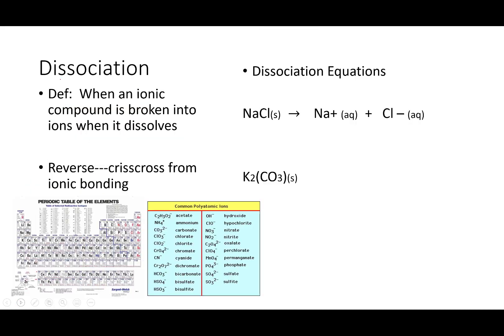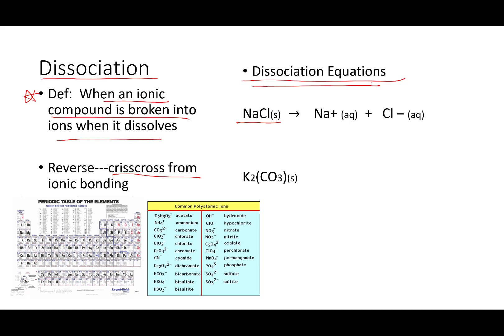This process of an ionic compound breaking into its ions is called dissociation, and that's a definition you need to know. Chemists write what are referred to as dissociation equations — these are really, really simple. It is sort of reverse crisscrossing from back when we were making ionic bonds many weeks earlier. So if we look at sodium chloride, when it dissociates, it breaks back into ions — back into that positive sodium ion and that negative chlorine ion.